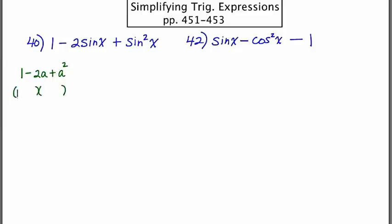The factors of 1 are 1 and 1. The factors of a are a and a. And I think they're both going to be minus. And we could check by foiling. First would be 1 minus a minus a minus 2a plus a squared. Yeah, that's right.